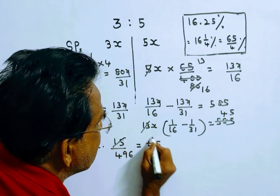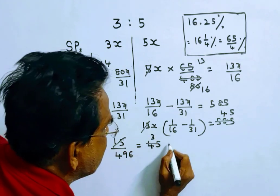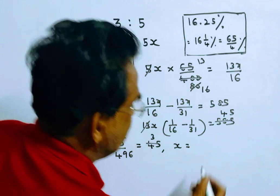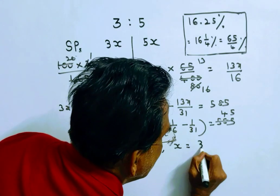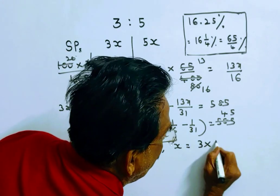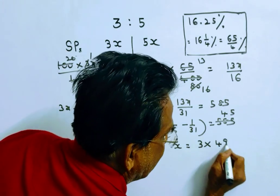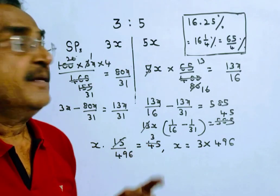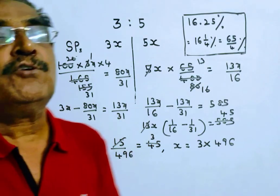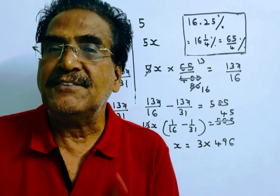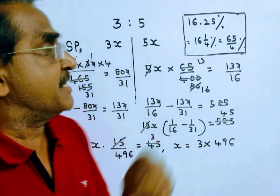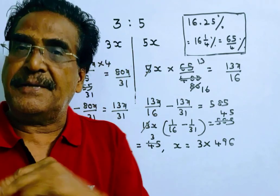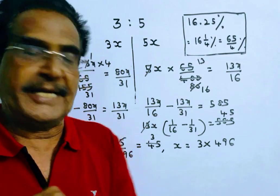So x is equal to 3 × 496. Now we want the difference between the selling prices. The difference between the selling prices is 5x minus 3x, which equals 2x.